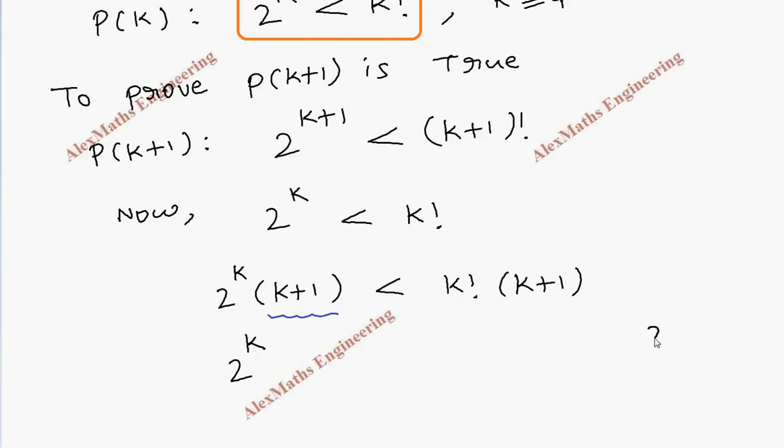2 is less than k+1. Whatever we put for k, always 2 is less than k+1. So when I replace a value which is less than k+1, this inequality is not affected. So we are going to replace this k+1 as 2.